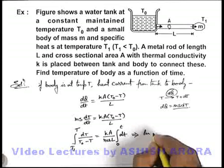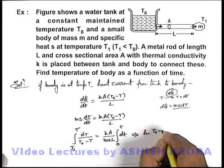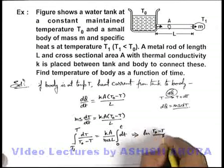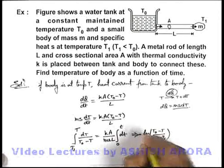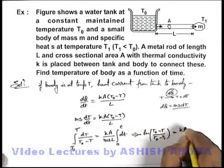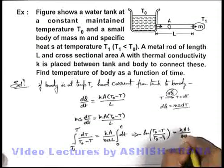ln of (T₀ - T)/(T₀ - T₁) with a negative sign is equal to kAt/(msL).